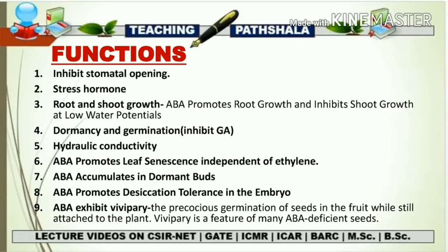The fifth function of abscisic acid is in hydraulic conductivity — decreasing the resistance of water movement across the membrane. ABA increases hydraulic conductivity and ion flux of roots in response to water stress. The sixth important function is that ABA promotes leaf senescence independent of ethylene, playing a very important role in the overall senescence of a plant.